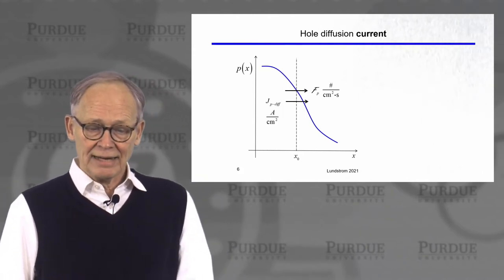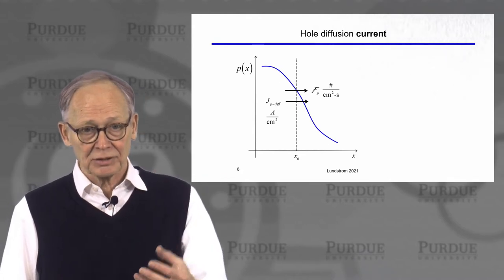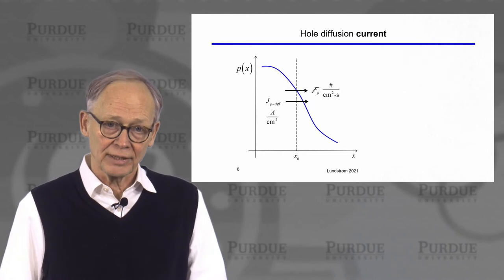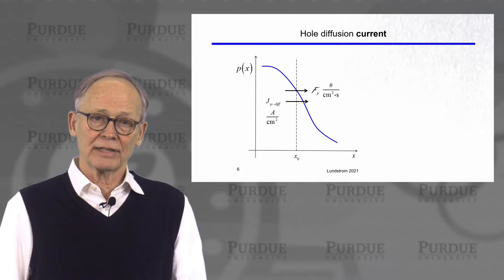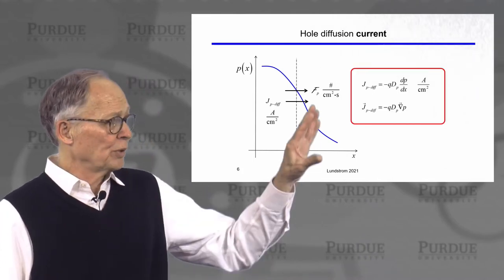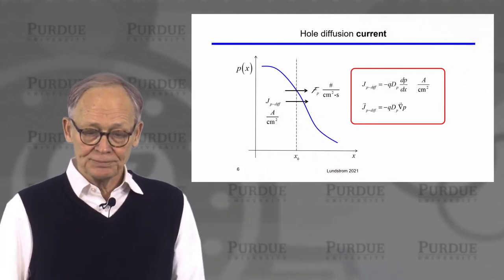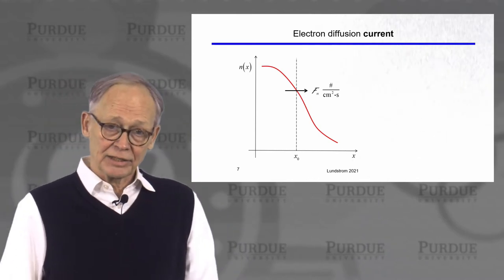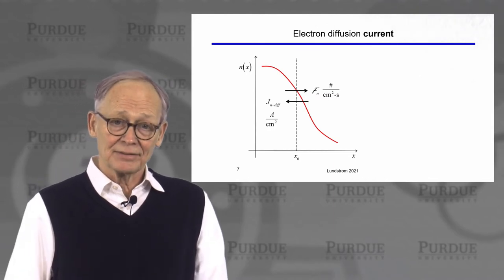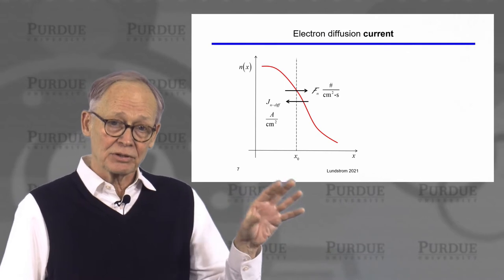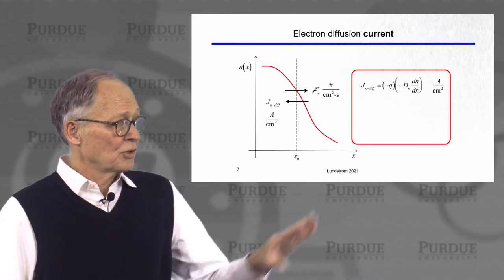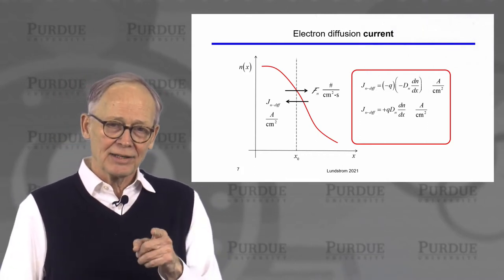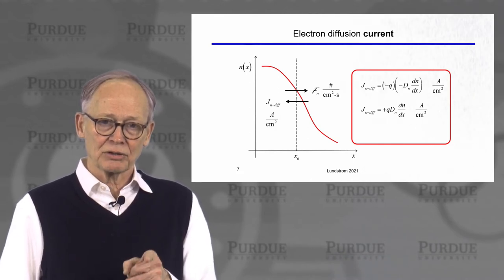What about currents? We simply multiply the particle flux by the charge each particle carries. The charge is positive for holes, so there will be a hole current in the direction of the flux. The hole diffusion current density in amps per square centimeter is the hole flux multiplied by charge Q. For electrons, they also move from high to low concentration, but electrons have a negative charge, so the electron diffusion current moves in the opposite direction of the electron flux. We multiply by the negative charge and get an expression for the electron diffusion current.